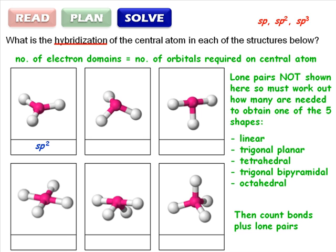The second molecule does not conform to one of the five basic shapes, but if we add a single lone pair, it does, a tetrahedron. Four electron domains, four orbitals, sp3.